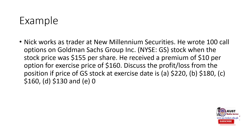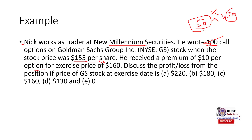Let's have another example. Nice is a trader at New Million Securities. He wrote 100 call options on Goldman Sachs stock when the price was 150 per share; he received a premium of $10 per option. The exercise price is 160. What is the profit and loss if the future spot price is 220, 180, 160, 130, or 0? You need to find the individual profit and loss at each future spot price. You can use the formula we just discussed to solve this yourself.